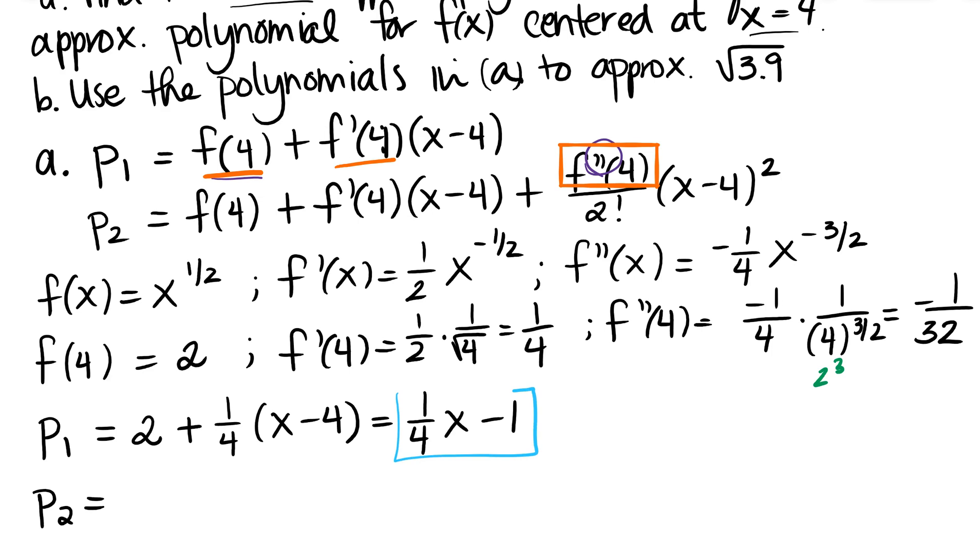So P sub 2 then, I know that P sub 2 is just P sub 1 and then some more stuff added on to it. So I'm just going to go ahead and put P sub 1 in that simplified form. Might as well. And then plus this stuff right here. So the second derivative was negative 1 32nd divided by 2 times x minus 4 quantity squared.